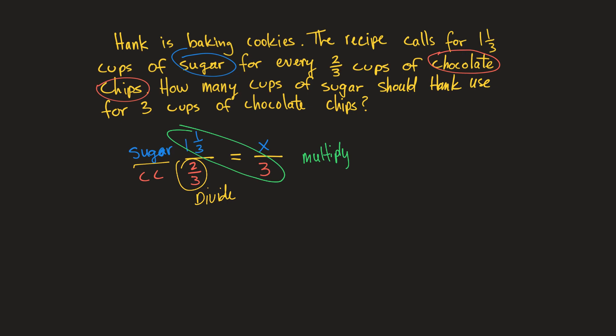So I'm going to first multiply one and one-third times three. Three I could write as three over one. One and one-third is the same as four-thirds times three over one. And isn't it neat that these would cancel? And you would be left with four.